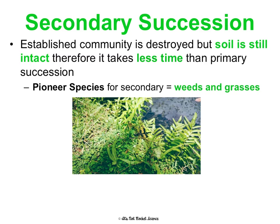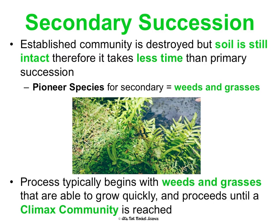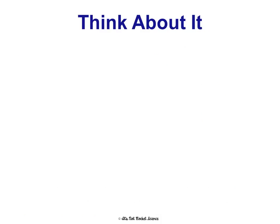The first species for secondary succession will be things like weeds and grasses. There may be mosses and lichens, but if soil is already there, weeds and grasses are already able to grow. From there, we're typically going to go through the same stages as primary succession, but it's going to happen more quickly until we reach that climax community.